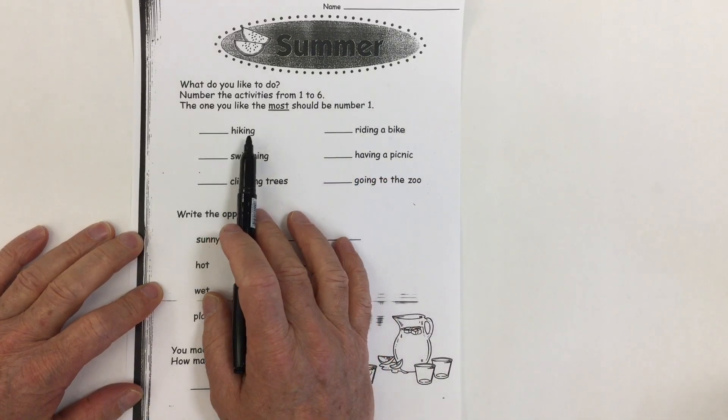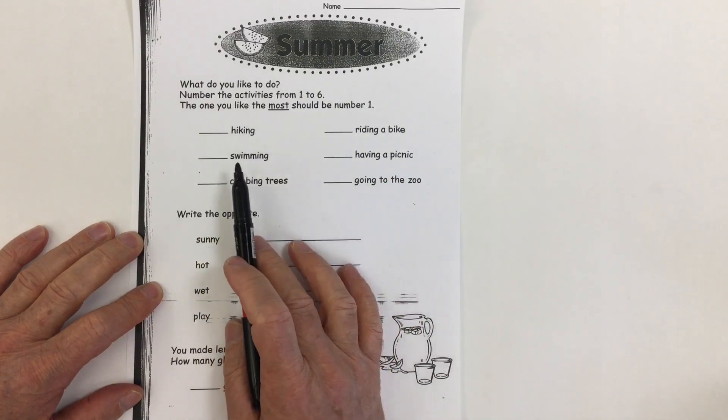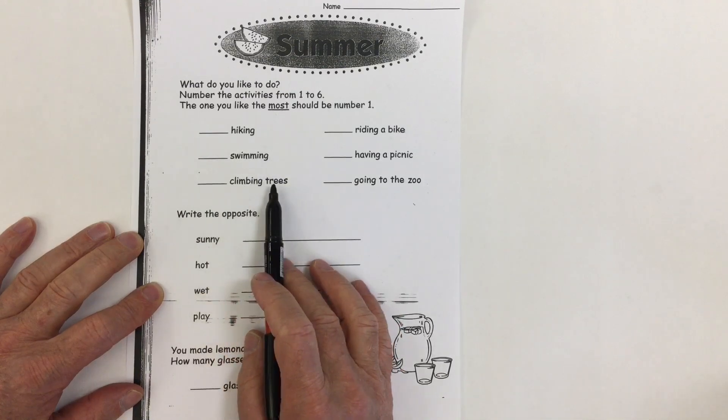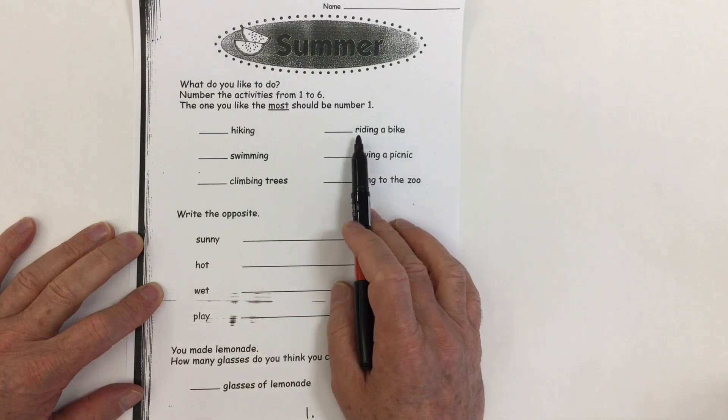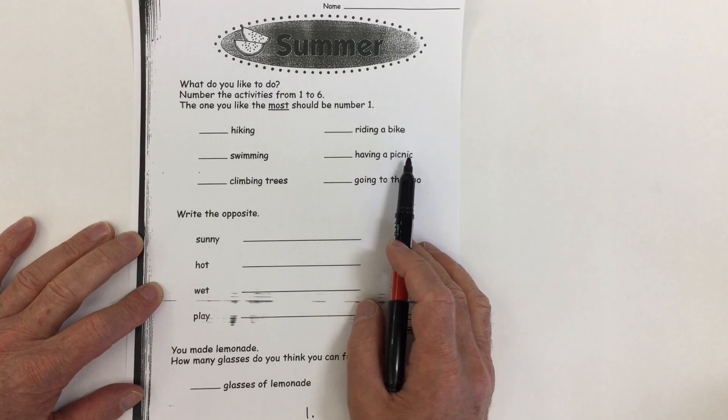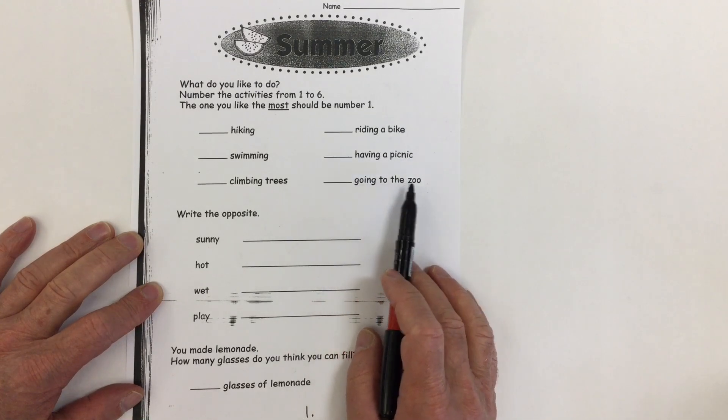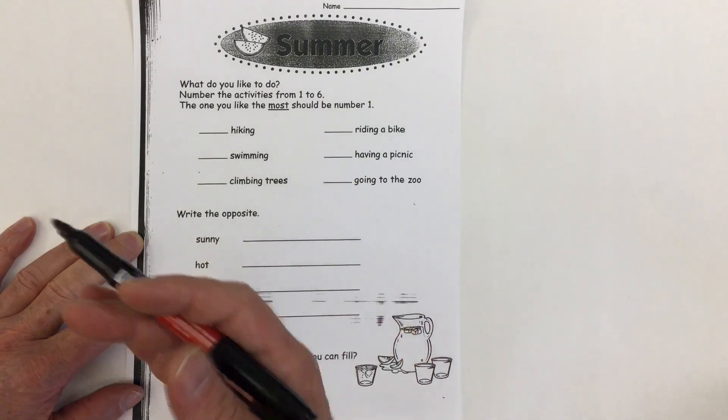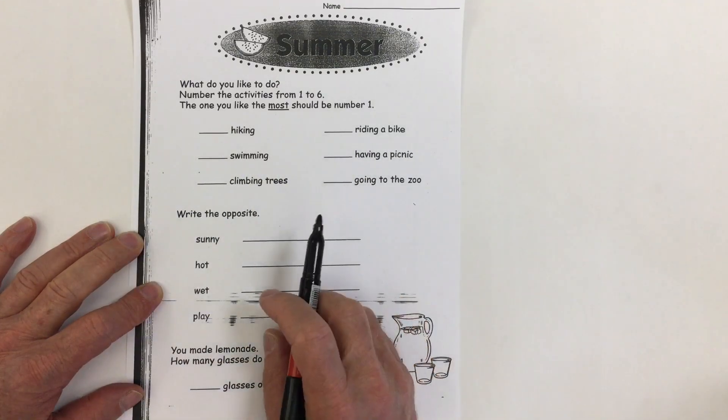Let's see our choices are hiking. Do you like that the best? Swimming. Is that your favorite? Climbing trees. Riding a bike. That's a good one. Having a picnic. Or going to the zoo. Which one out of those six will be your favorite? And everybody's answers might be different. It's up to you.